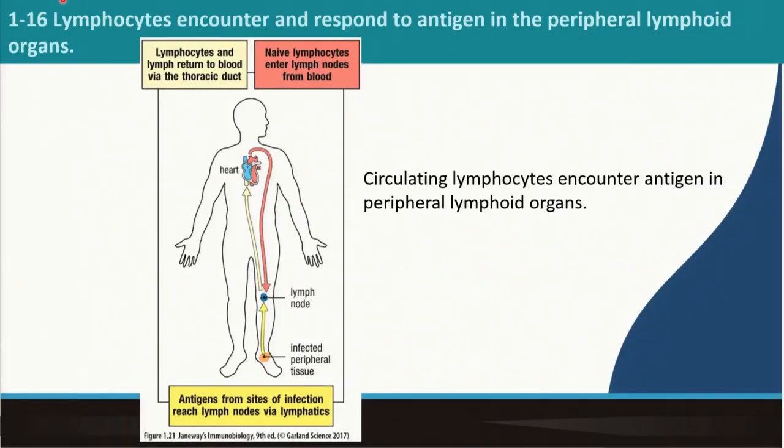In the last class, we ended up with the dendritic cell being the bridge between innate and adaptive immunity. Today, what we are going to see is how innate immunity and adaptive immunity are bridged together. The first slide, we are talking about circulating lymphocytes encountering antigen in peripheral lymphoid tissue.